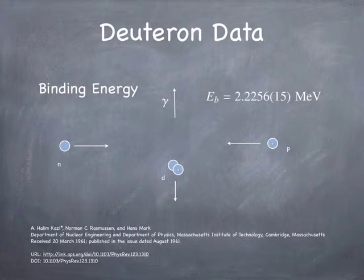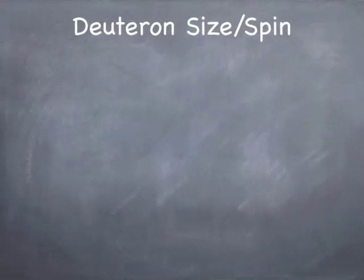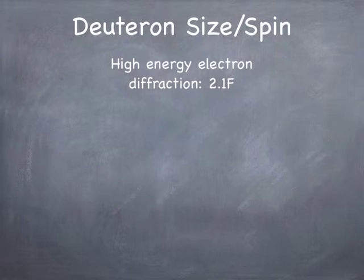That's probably the most precise number to date that I'm aware of — maybe other folks have measured it — but that's a good number. The other question is the size and spin. Through high-energy electron diffraction experiments, folks have determined that the charge size of the deuteron — its Coulomb size, since electrons interact through the electrostatic interaction — measuring the charge distribution, it's about 2.1 Fermi in radius, so about 4 Fermi in diameter.